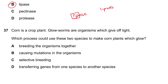Question 37: Corn is a crop plant; glowworms are organisms that give off light. Which process could use these two species to make corn plants that glow? You can't breed two different species together. Causing mutations — no, you can't control that. Selective breeding — no. Transferring genes — yes, this is genetic engineering.